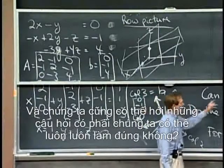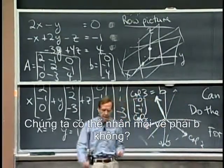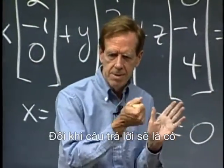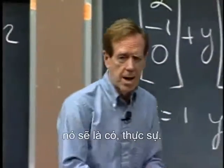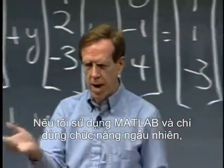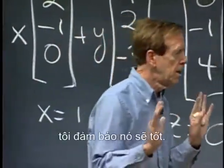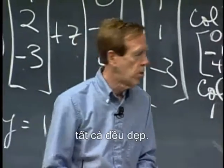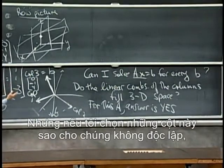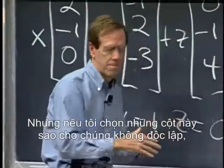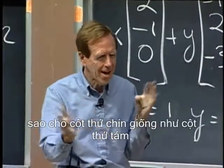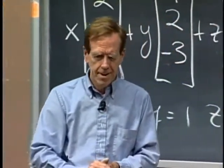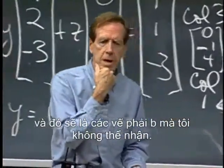We would be trying to find the combination that hits the correct right-hand side B, and we might ask: can we always do it? Can we get every right-hand side B? It certainly depends on those nine columns. If I picked a random matrix — say using MATLAB's random command to pick a nine-by-nine matrix — it would be non-singular, invertible. But if I chose columns so they're not independent, so the ninth column is the same as the eighth, then it contributes nothing new and there would be right-hand sides B that I couldn't get.